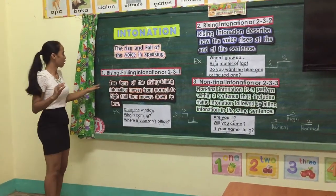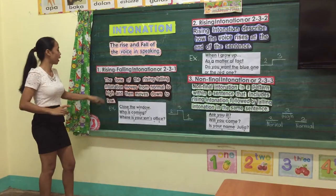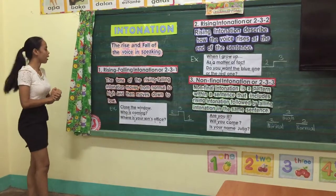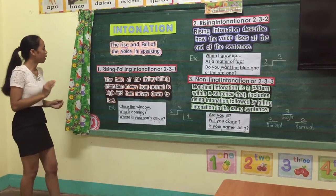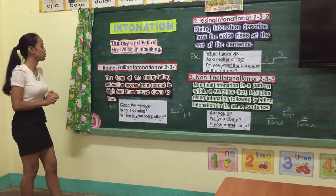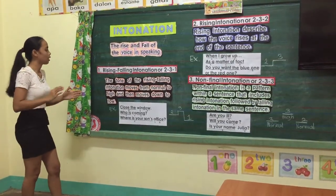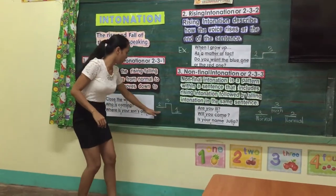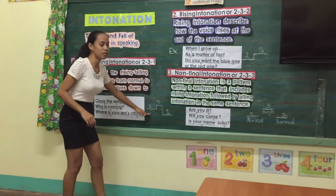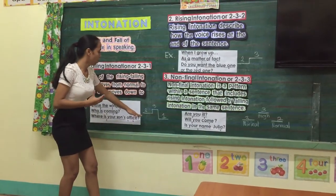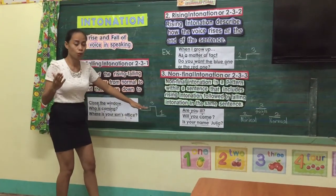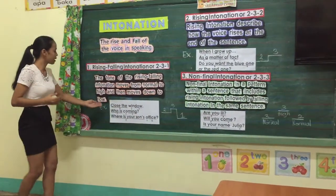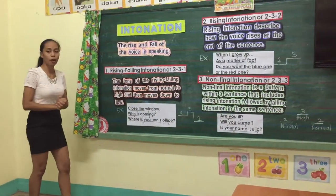What is rising-falling intonation or 2-3-1? The tone of the rising-falling intonation moves from normal to high and then moves down to low. Here is the pattern: 2 is considered the normal tone, 3 is the highest tone, and 1 is the lowest tone. Here are the examples of rising-falling intonation.